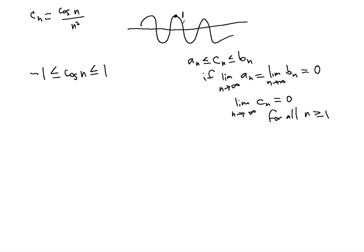Think of this as one for the cosine and this as negative one for the cosine—those are the boundaries for the values that cosine can have. Now notice that if we divide all three sides of the inequality by n squared, it will still be true. So negative one over n squared is less than or equal to cosine n over n squared, which is less than or equal to one over n squared.